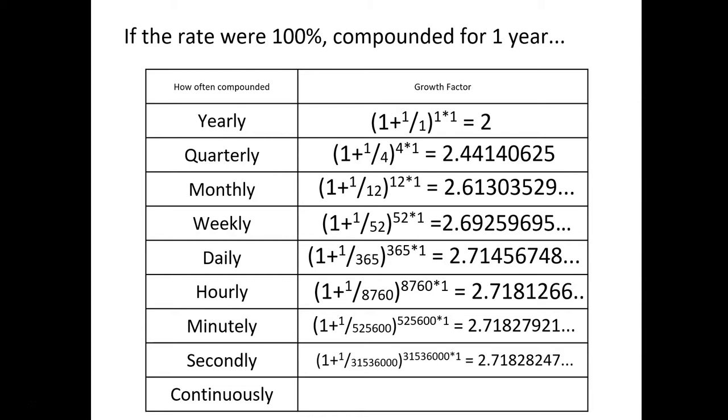If I do it secondly, it would be 2.71828. Now, what's faster than secondly? Bi-secondly, millisecondly, nanosecondly, we keep doing that. But the very fastest you could do is continuously. So what if there was no time between compounds, if it's just always compounding? And you think that's how populations grow. They're just constantly growing.